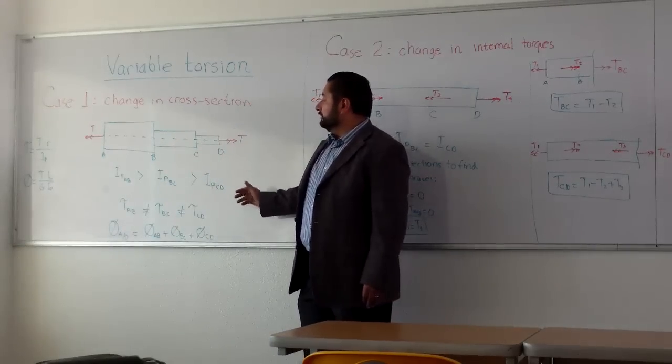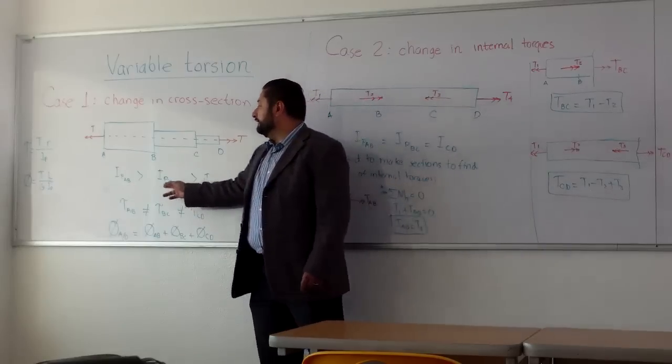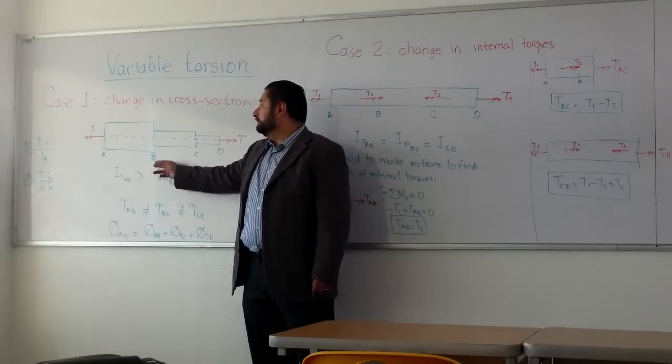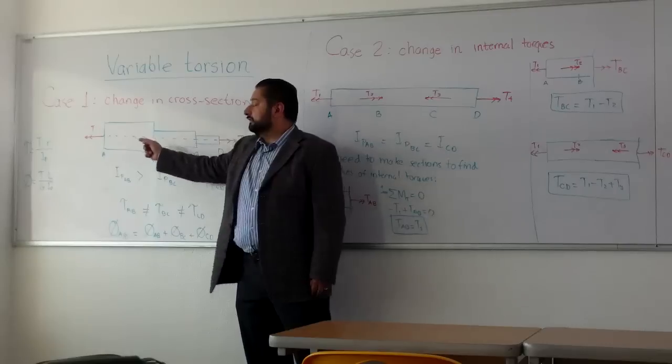This is the first case. Change in cross section. The only thing we need to do is calculate the appropriate polar moment of inertia. There are only torques at the ends of the bar.